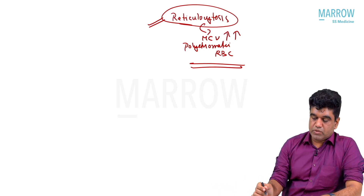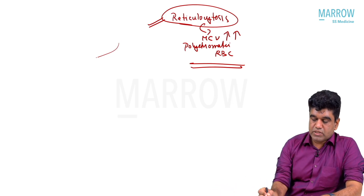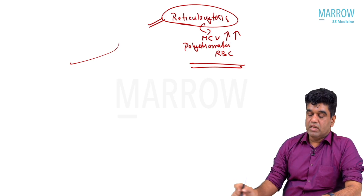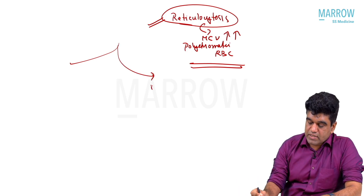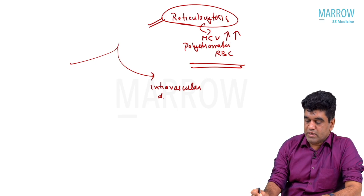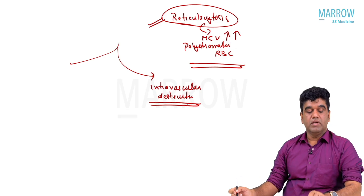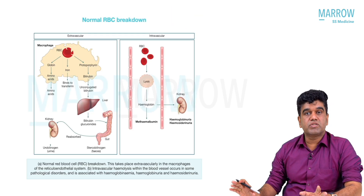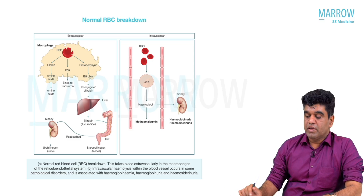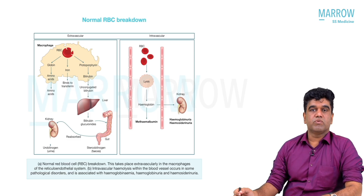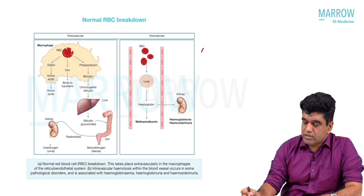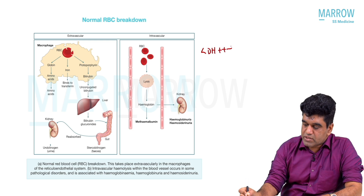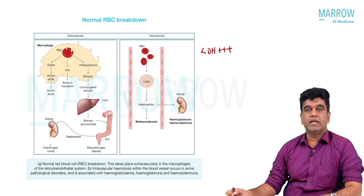Normally, destruction happens extravascularly. Suppose you have a disease where there is intravascular destruction — RBCs are being destroyed in the blood. There is considerable destruction going to happen. Wherever there is destruction there is going to be LDH, and with intravascular destruction there is going to be significant LDH increase.